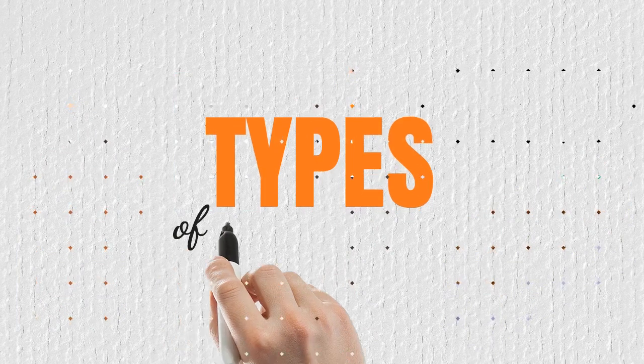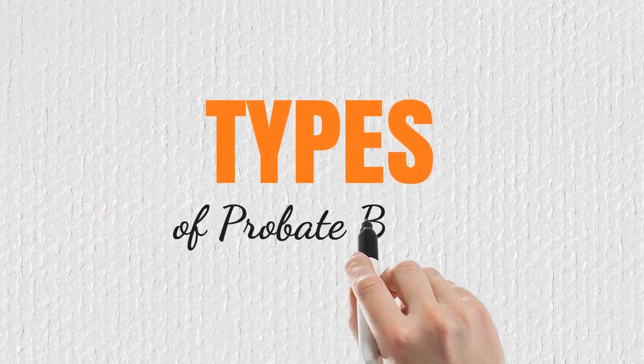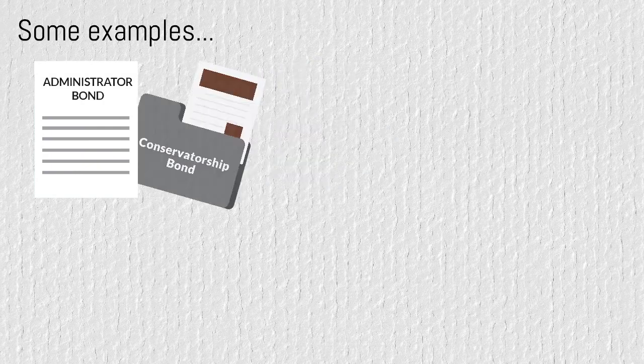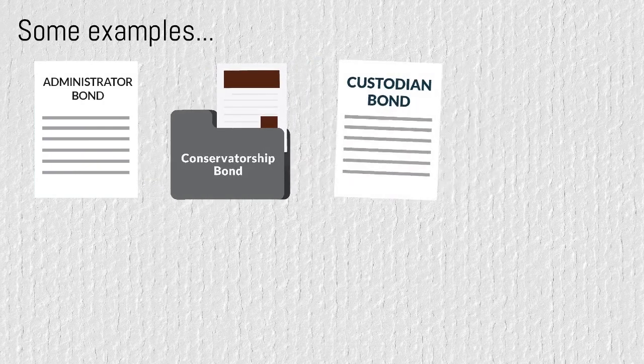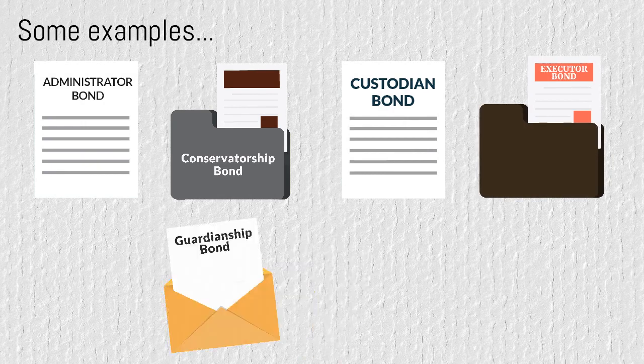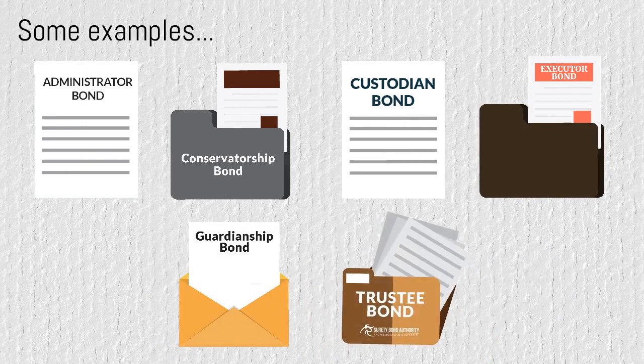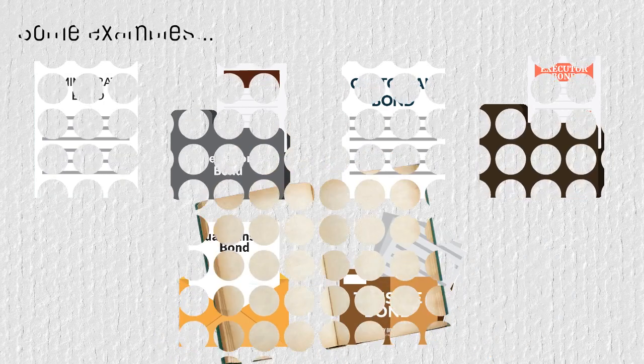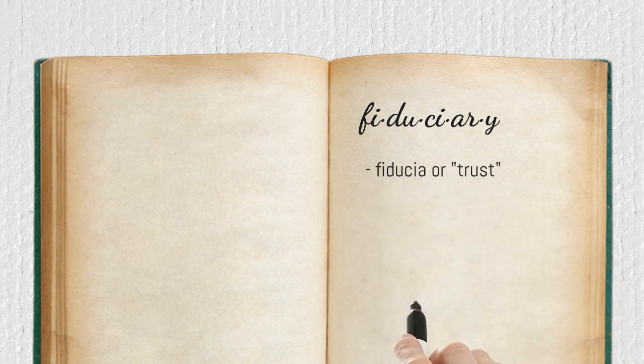There are many types of probate bonds. Here are a few examples: Administrator Bond, Conservatorship Bond, Custodian Bond, Executor Bond, Guardianship Bond, and Trustee Bond. The word fiduciary comes from the Latin fiducia, meaning trust.